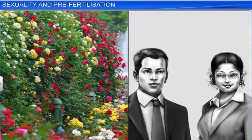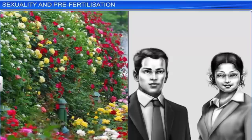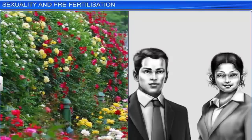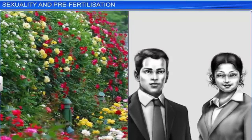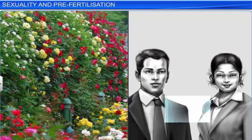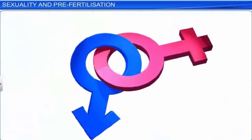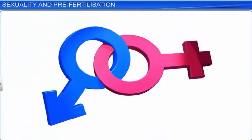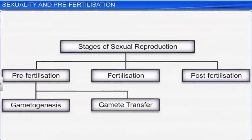While plants depend on water and wind for gamete transfer, unisexual animals such as human beings have developed a special mechanism called copulation for gamete transfer. Thus, whether in animals or plants, gamete transfer and gametogenesis are the two main events that occur in the pre-fertilization stage of sexual reproduction.